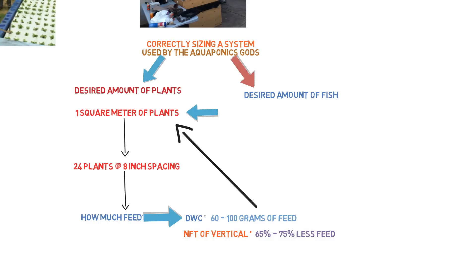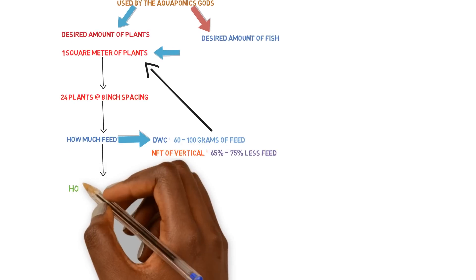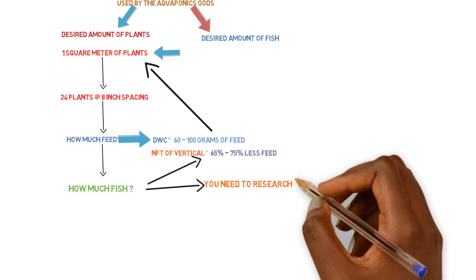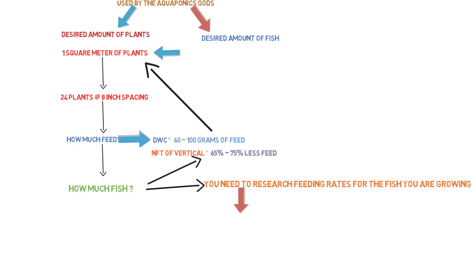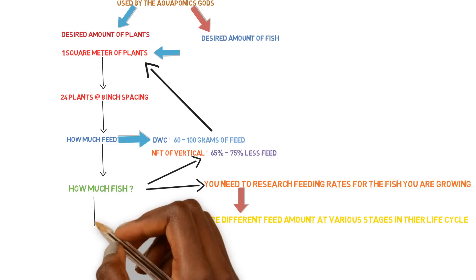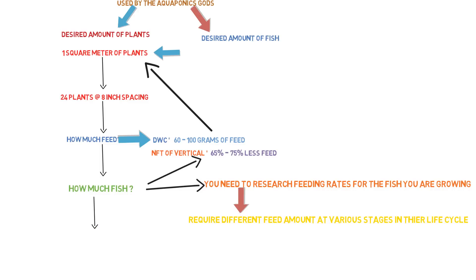So we know how much feed we now need to input, and now we need to find out how much fish we need to consume that food. And it may vary depending on the type of fish species that you have. So once you reverse and find out how much fish you need to grow at certain levels in a growing phase of the fish to consume that much amount of food, then you'll know exactly how to correctly stock your system.